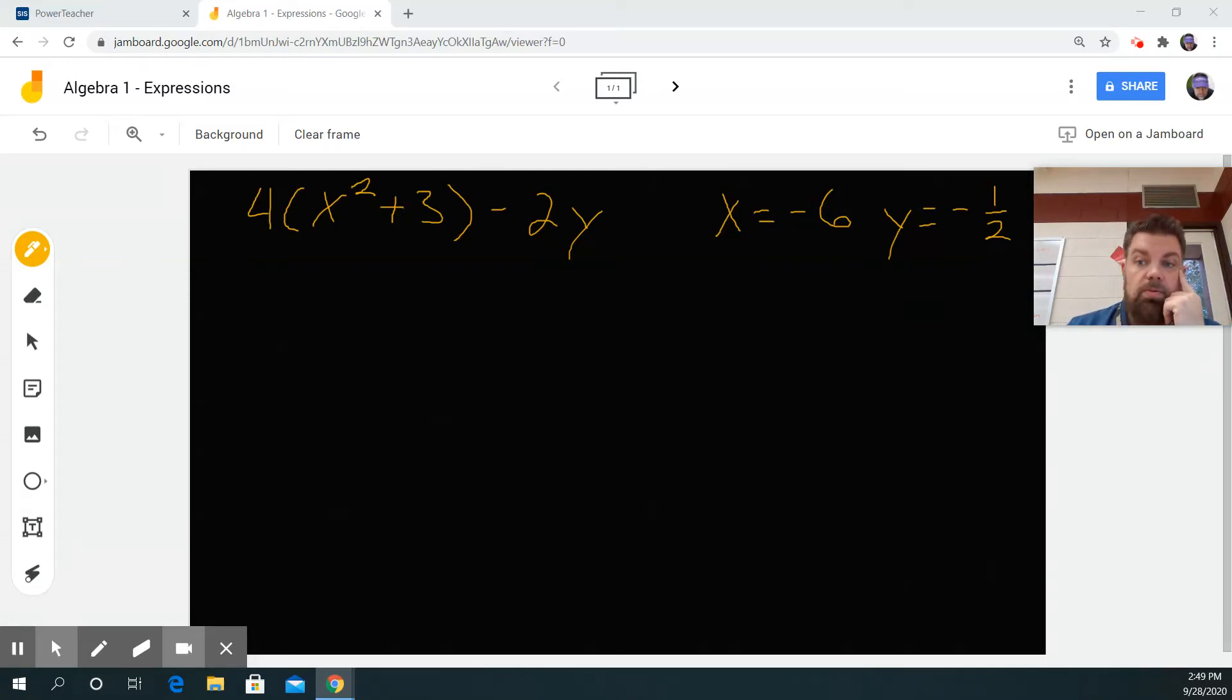Okay, so basically wherever there is an X, I'm going to plug in a negative 6, and I'm going to plug it in in parentheses.